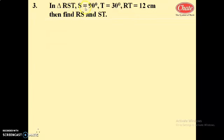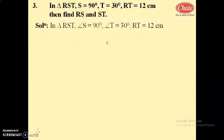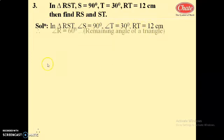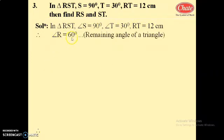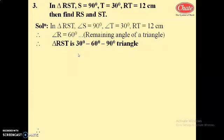Next, question number 3 from the problem set: in triangle RST, angle S equals 90 degrees, angle T equals 30 degrees, RT equals 12 centimeters. Find the length of RS and ST. In triangle RST, angle S equals 90 degrees, angle T equals 30 degrees, RT equals 12 cm, therefore angle R equals 60 degrees, since the sum of angles equals 180 degrees.